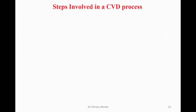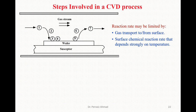Let's start the lecture. First we will look at the different steps involved in a CVD process. As you can see, we have a typical process inside the CVD system — we have a susceptor, wafers placed on it, and the process is shown stepwise. We have a gas stream and different processes within it. The reaction rate may be limited by gas transport to the pump surface and surface chemical reaction rates, which depend strongly on temperature. There are seven steps to discuss one by one.